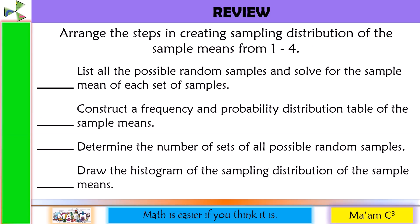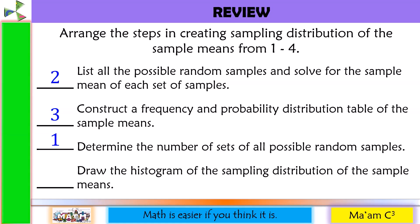Let's have a quick review of our previous lesson. Arrange the steps in creating a sampling distribution of the sample means from 1 to 4. First, we have to determine the number of sets of all possible random samples. Number two, we have to list all the possible random samples and solve for the sample mean of each set. Number three, we have to construct a frequency and probability distribution table of the sample means. And number four, we have to draw the histogram of the sampling distribution of the sample means.